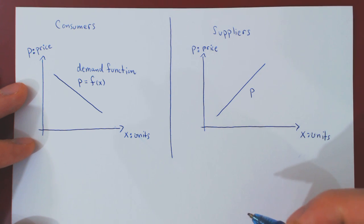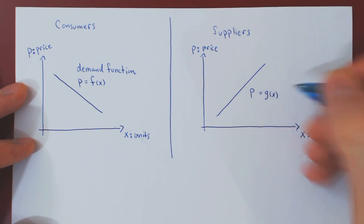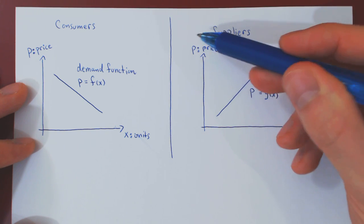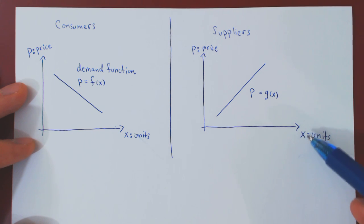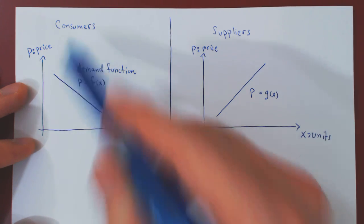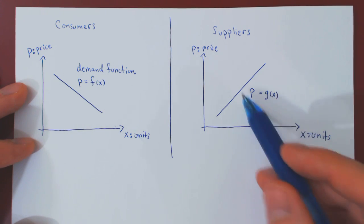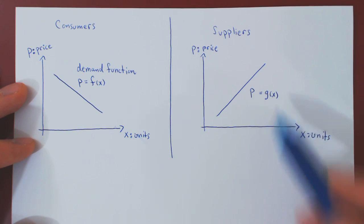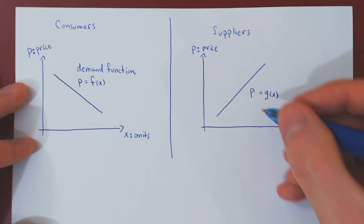Let's say that P is G of X. The higher the selling price, the more units suppliers are willing to sell to consumers. And if the demand function is P equals F of X, then looking at the suppliers, P equals G of X is called the supply function.